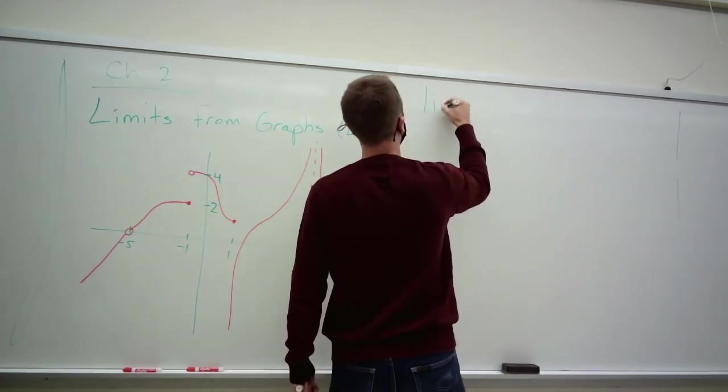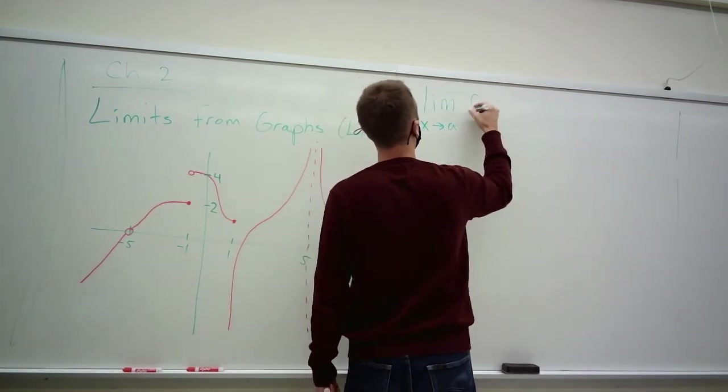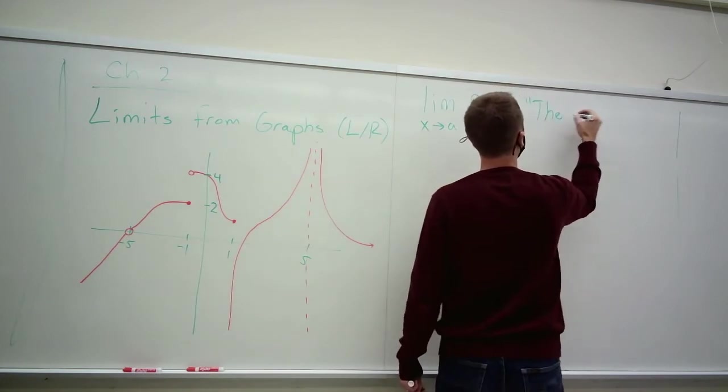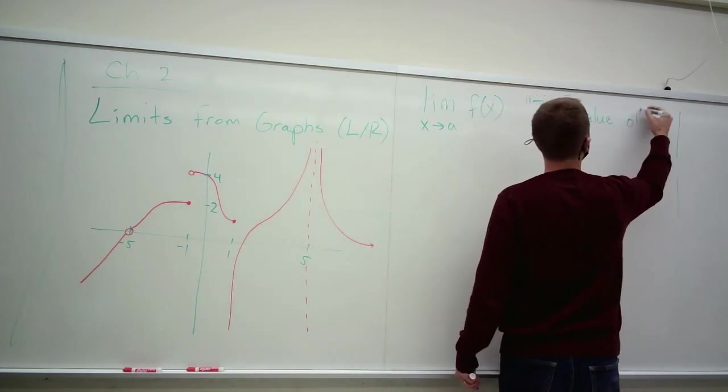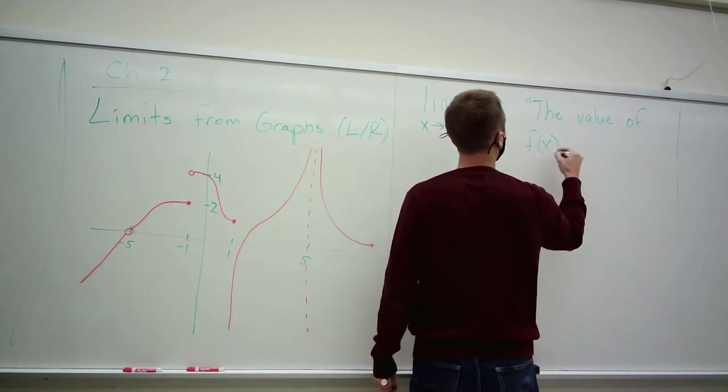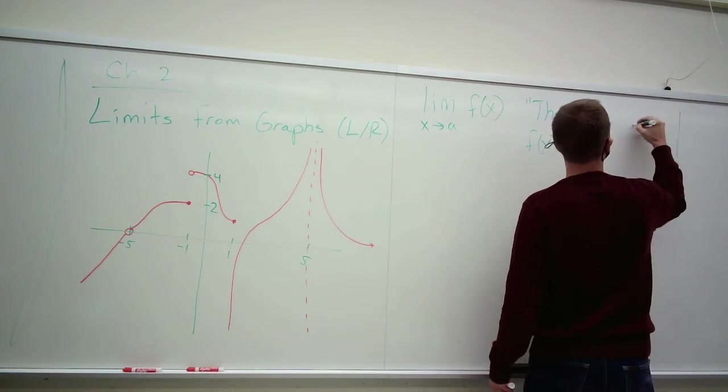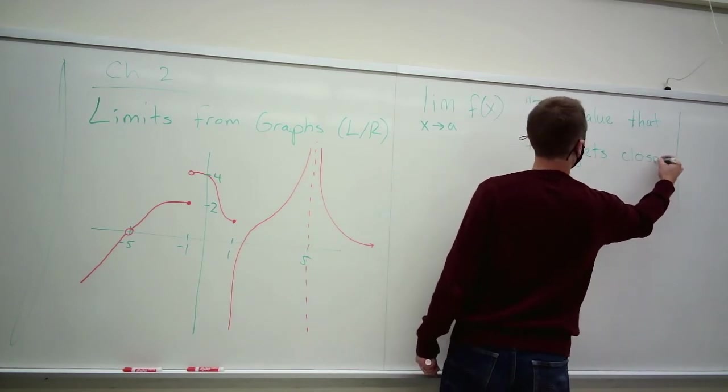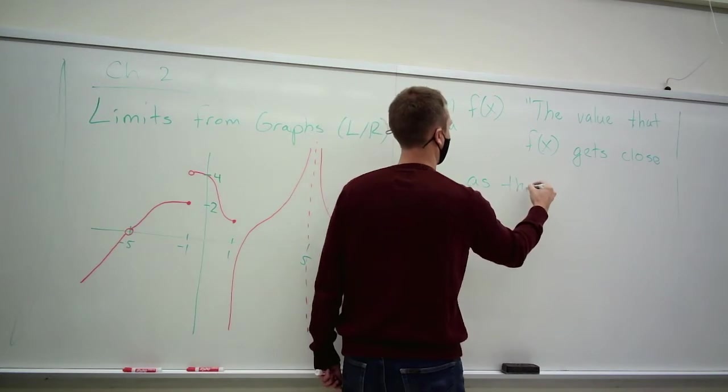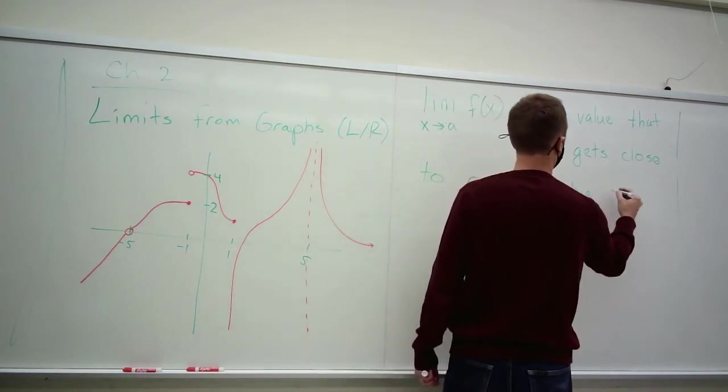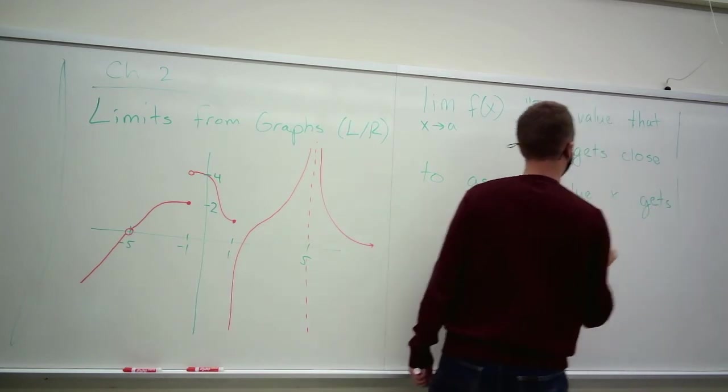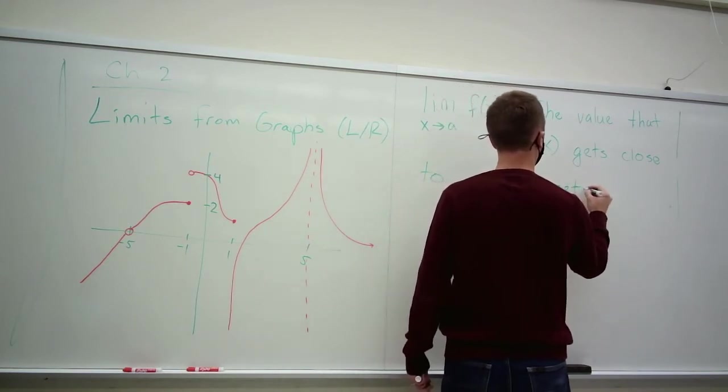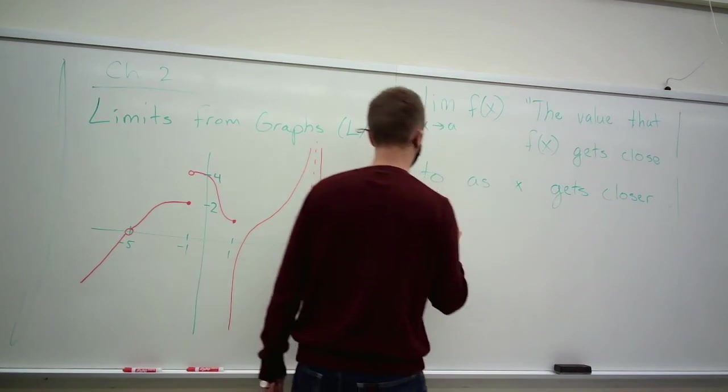So I introduced this limit notation, and in words it basically tries to communicate the value of f of x, the value that f of x gets close to as the value of x gets as.